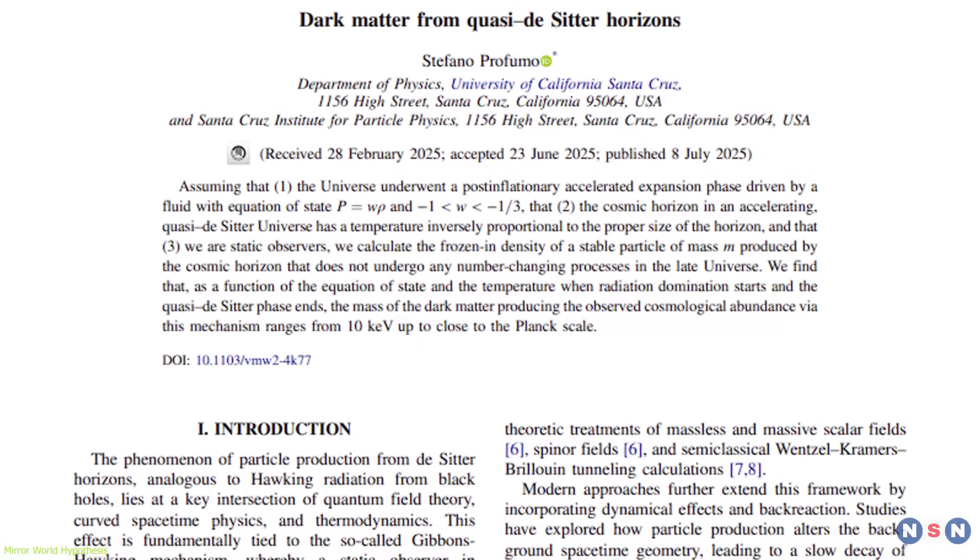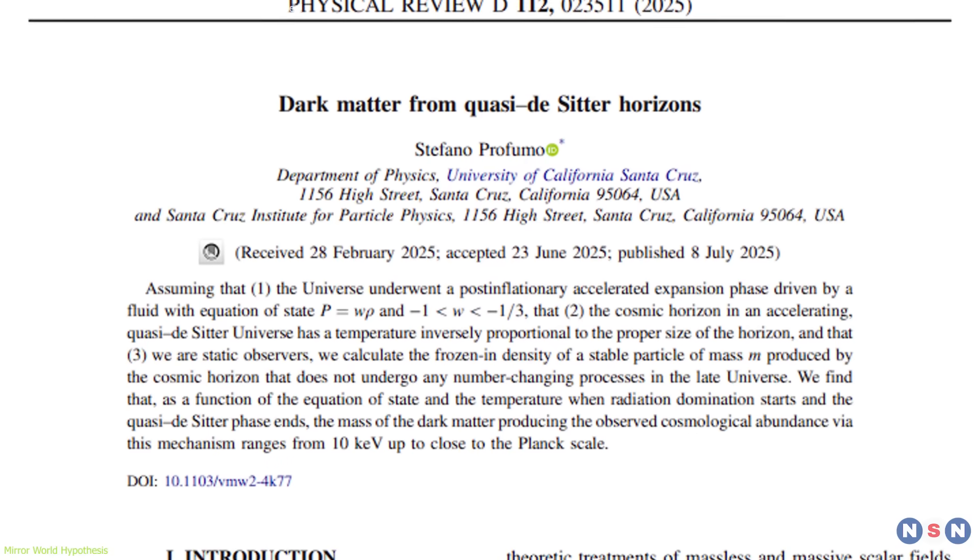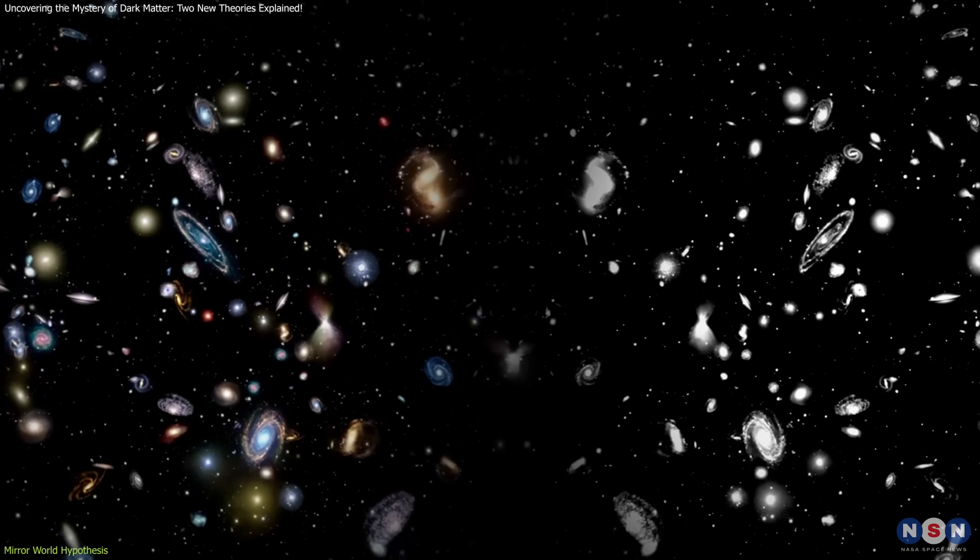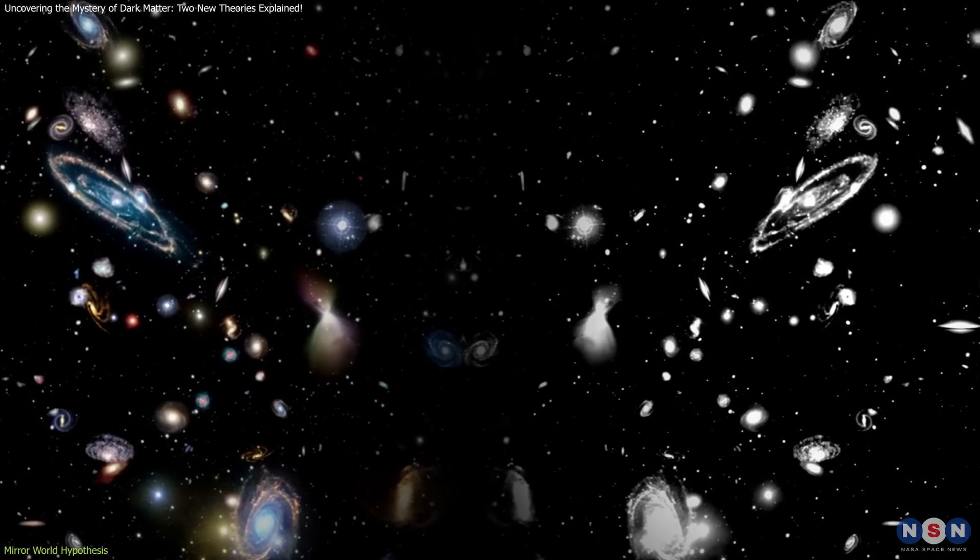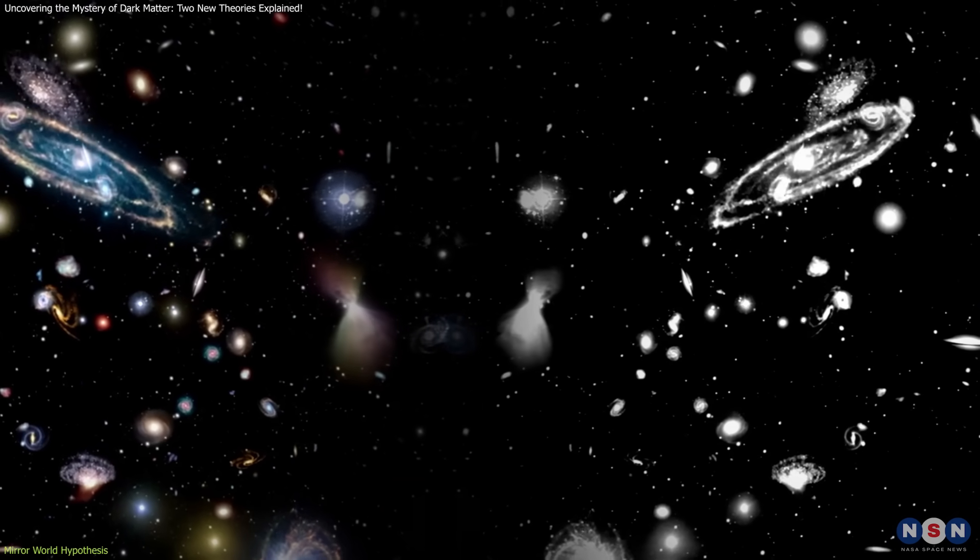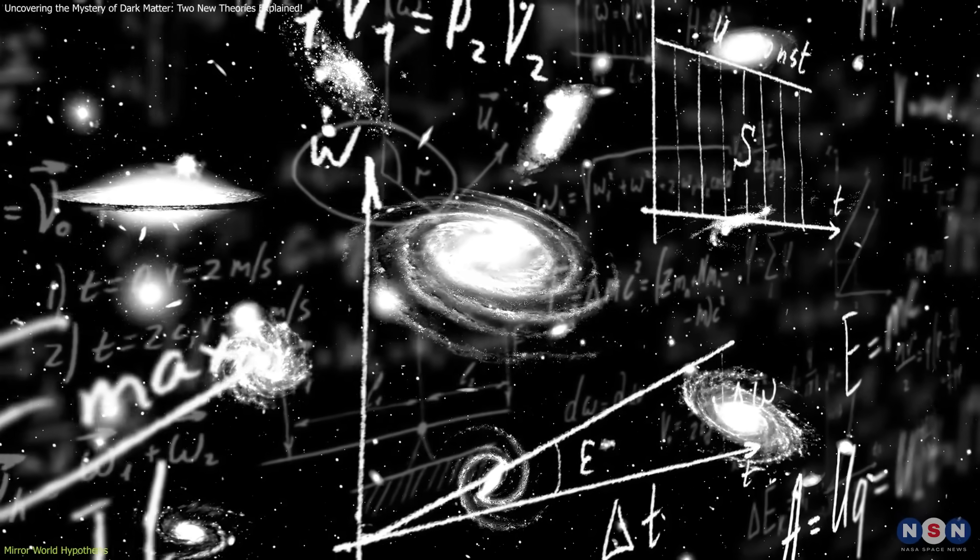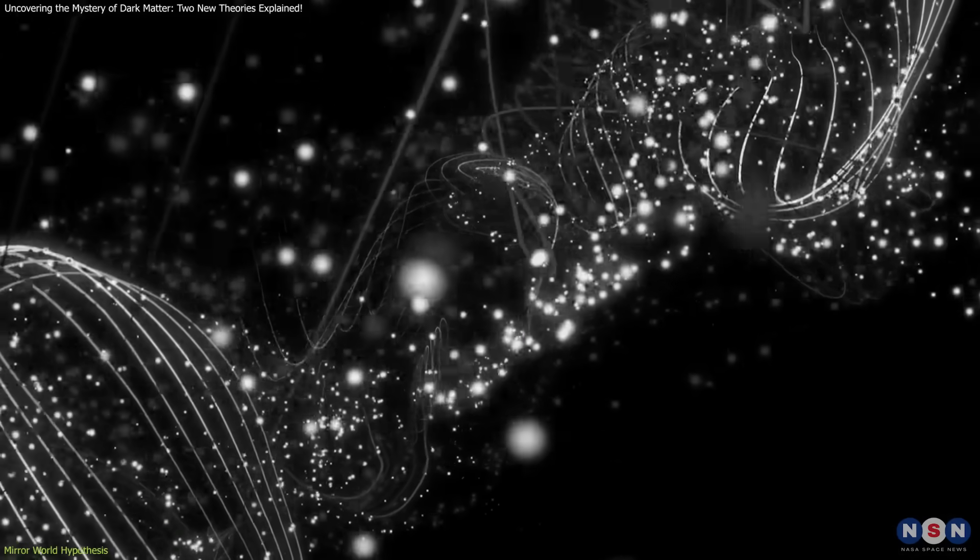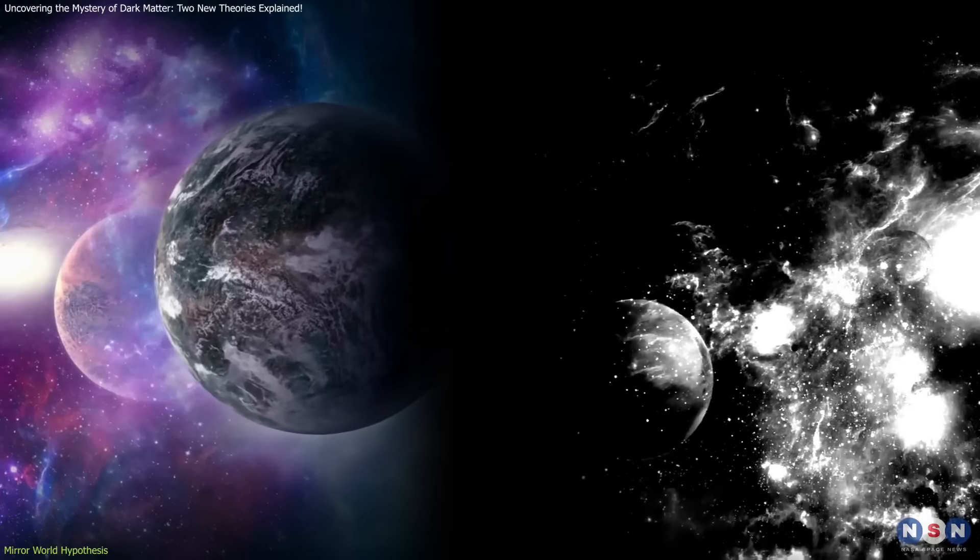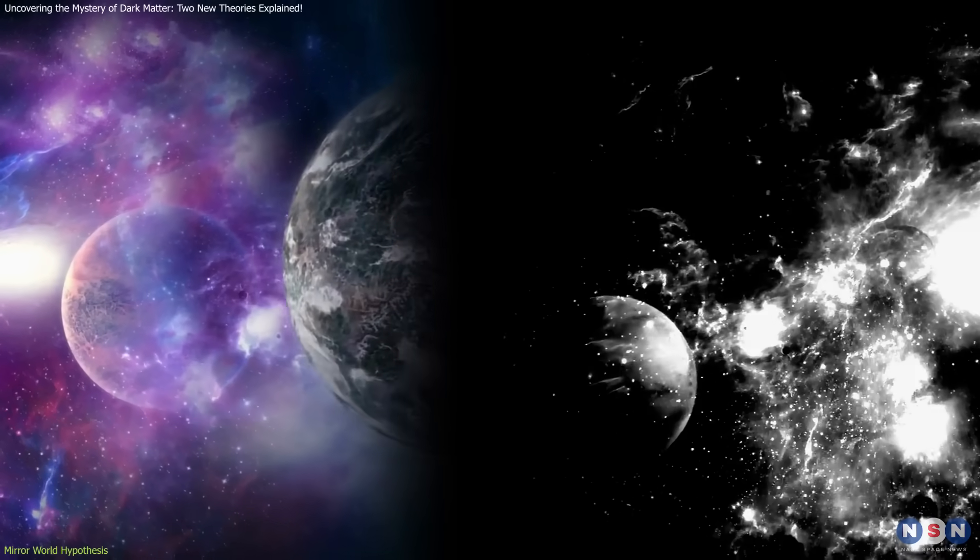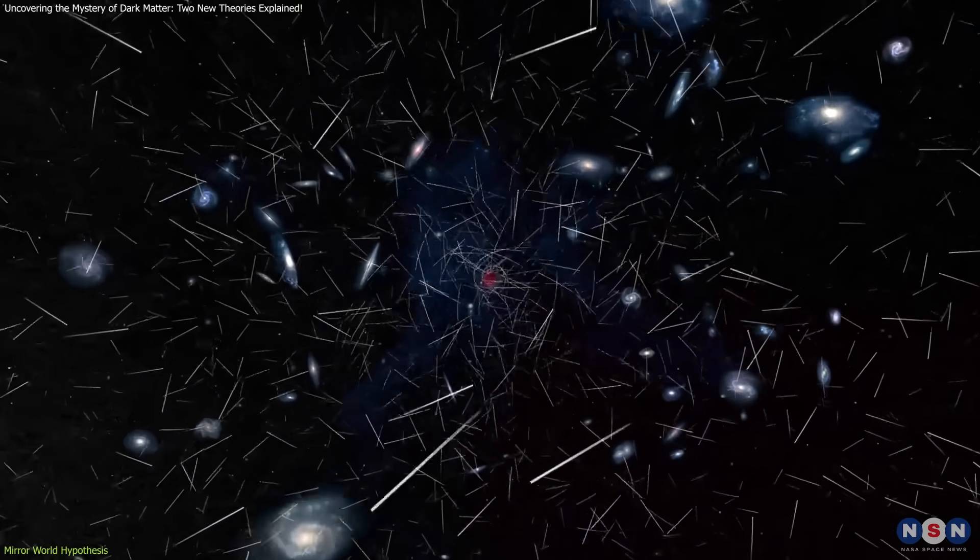One of the theories, published in July 2025, introduces the concept of a mirror world. This theory suggests the existence of a hidden sector, a mirror universe, that runs parallel to our own. While this universe would follow the same fundamental physical laws, its particles and forces would be entirely separate from those we observe in our universe. Essentially, this hidden universe would be invisible to us, yet its particles could have a profound impact on the cosmos.